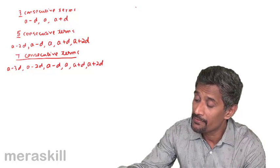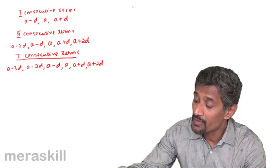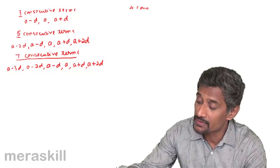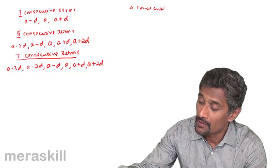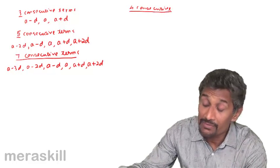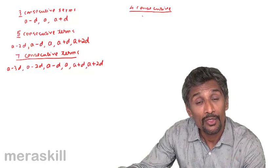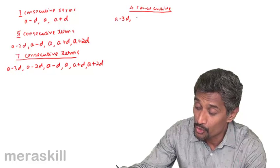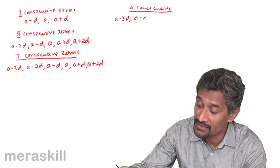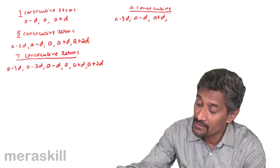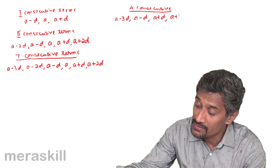But suppose we have, say, four consecutive terms. In that case, we keep the difference as 2D. So we start with A minus 3D, then 2D more than this, that is A minus D, then further 2D more than this, that is A plus D, and then further 2D more than this, A plus 3D.